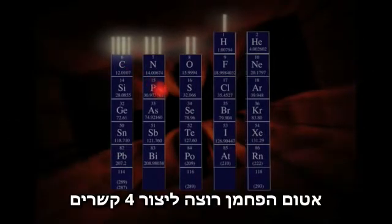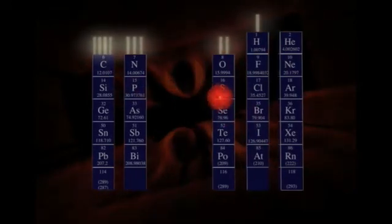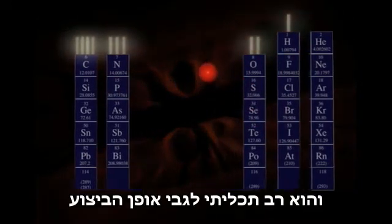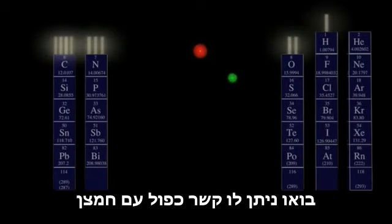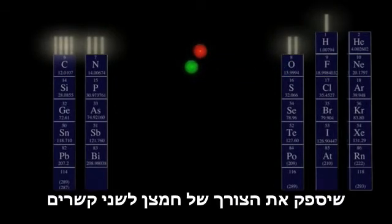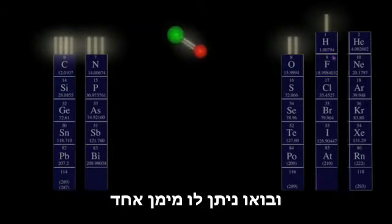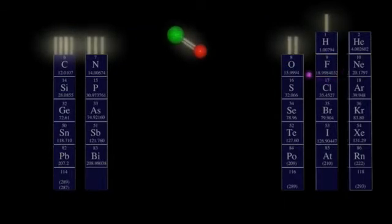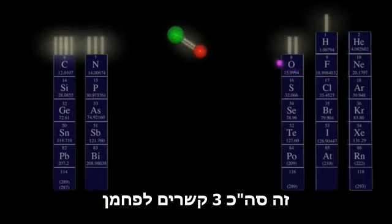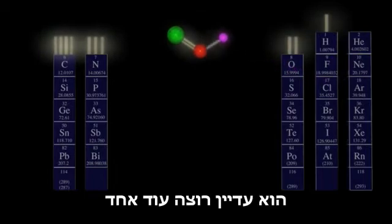Now this carbon atom wants to make four bonds, and it is pretty versatile about how it does this. Let's give it a double bond with oxygen, satisfying oxygen's desire for two bonds. And let's give it one hydrogen — that's a total of three bonds for carbon. It still wants another.